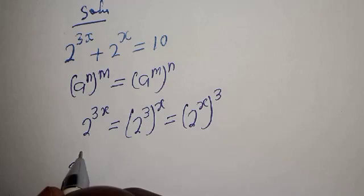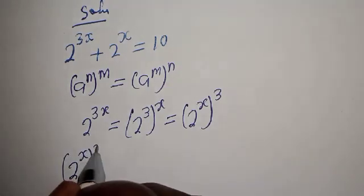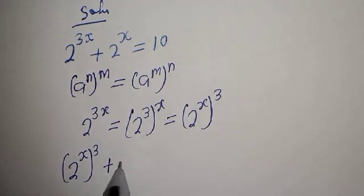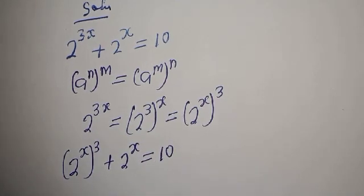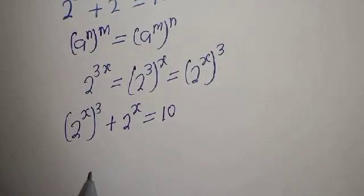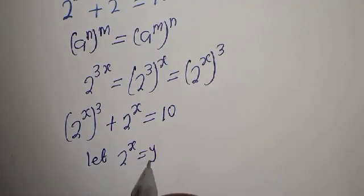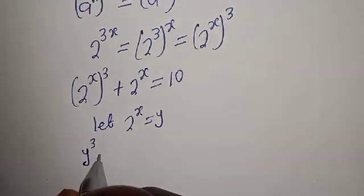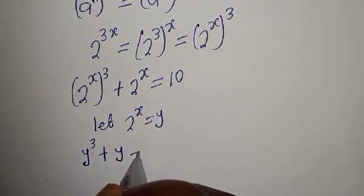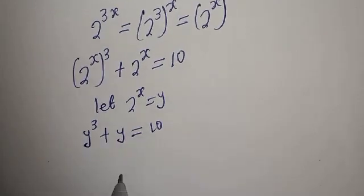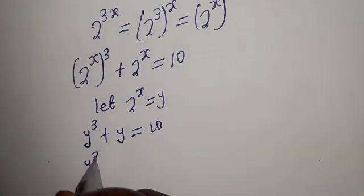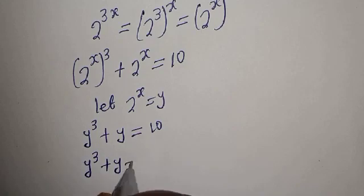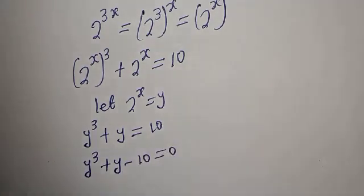We have 2 raised to power x to the power of 3x plus 2 raised to power x is equal to 10. Let 2 raised to power x equal to y. Then this is y raised to power 3 plus y is equal to 10, so y raised to power 3 plus y minus 10 is equal to 0.